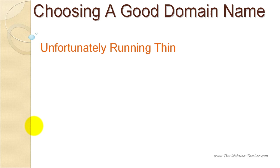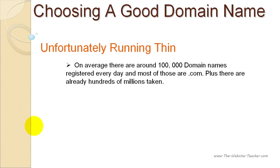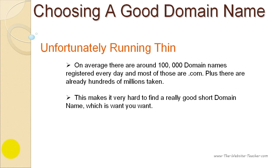Unfortunately, the .com domain names are running thin. Most of the good short domain names using the .com extension are taken. Every single day, there are approximately 100,000 domain names registered, and the majority of those are .com domain names. There are already so many million .com domain names registered, and that number is growing very fast. This makes it very hard to find a good short domain name, however it doesn't make it impossible — you can still get a good domain name that nicely represents your blog, you'll just have to use slightly longer domain names, which is fine.